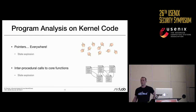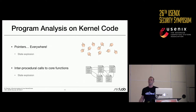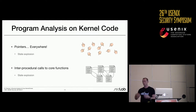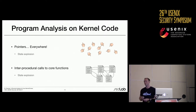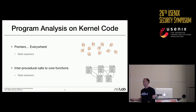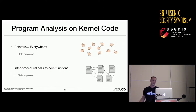There's a problem when you try to do program analysis on kernel code. First, there are pointers everywhere — functions defined as pointers, pointers pointing to pointers — and when you try to do static analysis on this, your state explosion goes through the roof. There are also a ton of interprocedural calls to core functions, so you'll look at a very small function in a kernel driver, but it calls a kernel function, and next thing you know, this small function has a huge state explosion and your analysis never finishes. These are the two core things we tried to tackle in Dr. Checker.